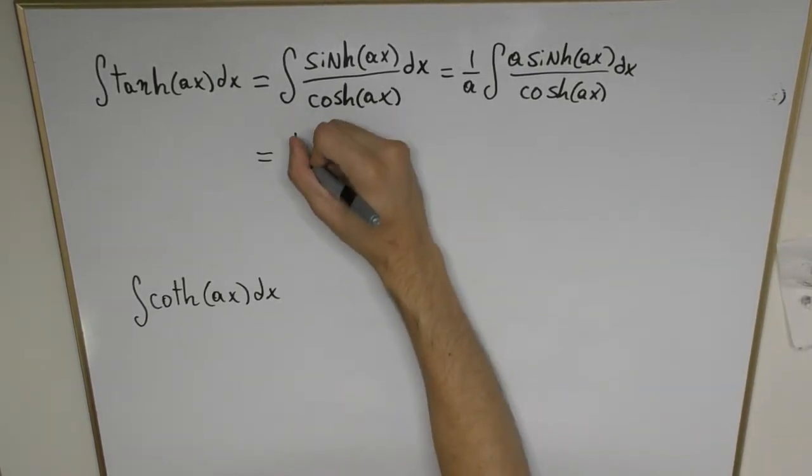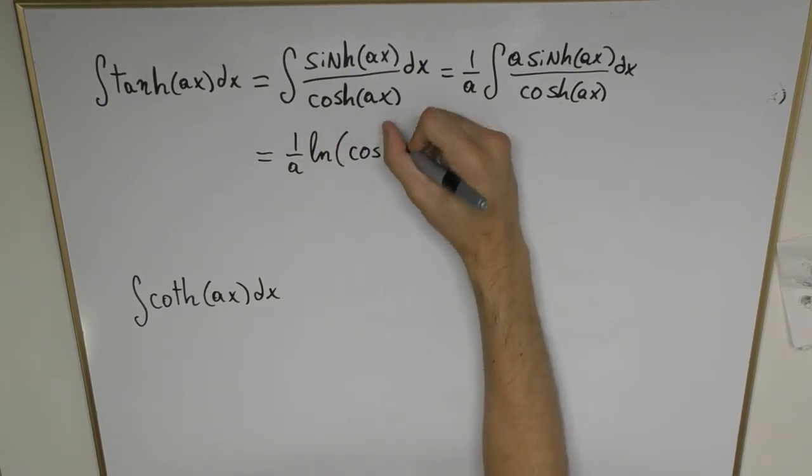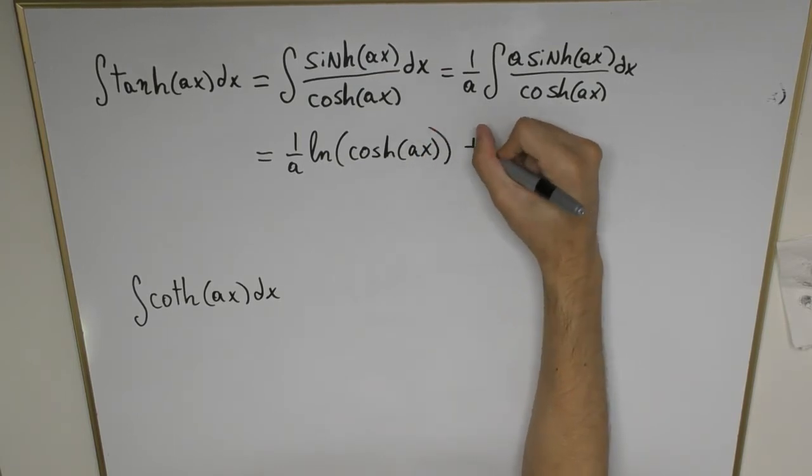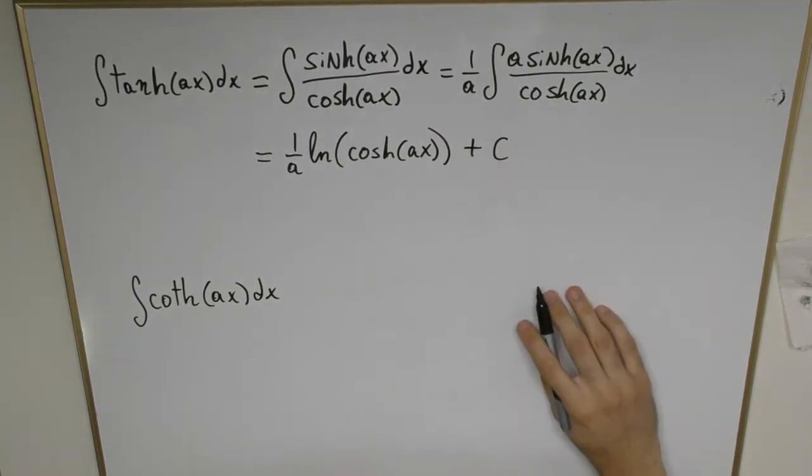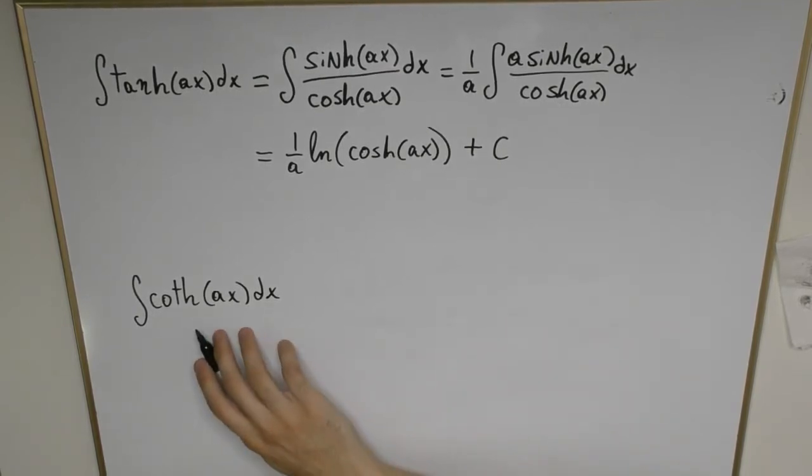We already know this is going to be in the form of 1 over a times the natural log of cosh(ax) plus the constant C and that's going to be our final result. Now let's go ahead and do the next one.